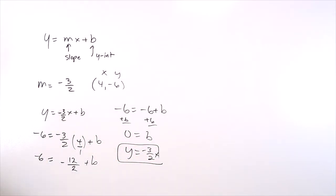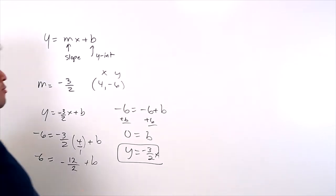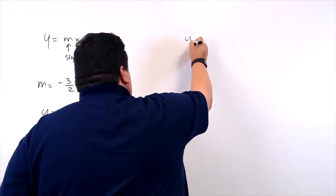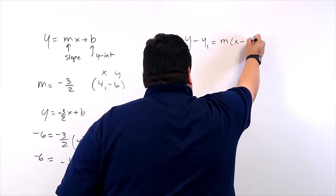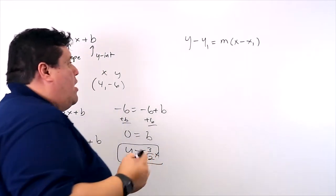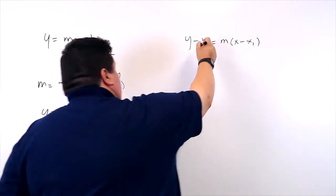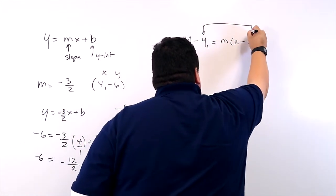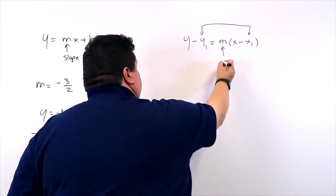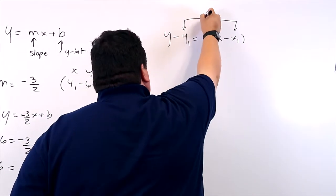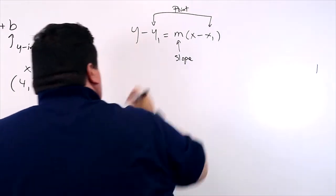Now, let's try another one. Let's try the point slope form. Point slope. So that's going to be y minus y1 equals m times x minus x1. Why is it called point slope? Because you have your point and you have your slope.